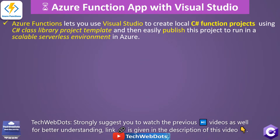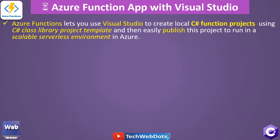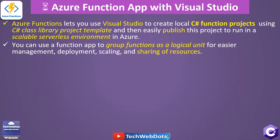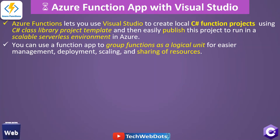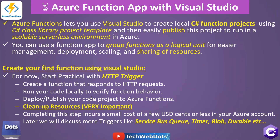Azure Functions lets you use Visual Studio to create local C# function projects using a C# class library project template, and then easily publish that project to run in a scalable serverless environment in Azure. You can use a function application to group functions as a logical unit — we can create one function app and inside that have multiple functions for easier management, deployment, scaling, and sharing of resources.